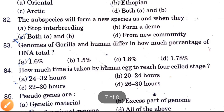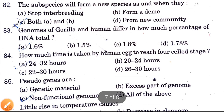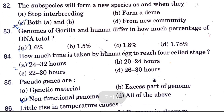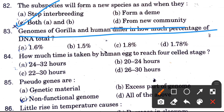The sub-species will form a new species when they stop interbreeding, form a dance, or both A and B, or form new community. The answer is both A and B.